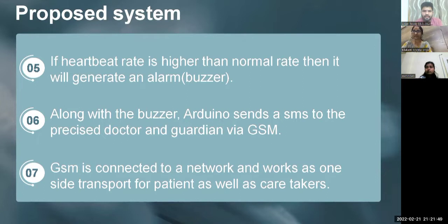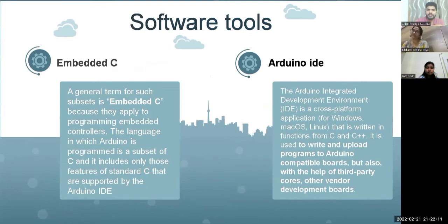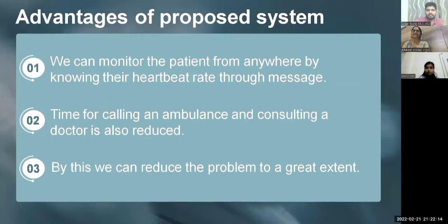We use a pulse oximeter to take readings, Arduino to calculate them, a buzzer to generate the alarm, and GSM to transfer the patient's condition to a parent, doctor, or guardian. This is built using Embedded C and Arduino IDE. The main advantage of the proposed system is that we can reduce the threat in critical situations, and the time for calling an ambulance and consulting a doctor is also reduced, helping solve the problem to a great extent.